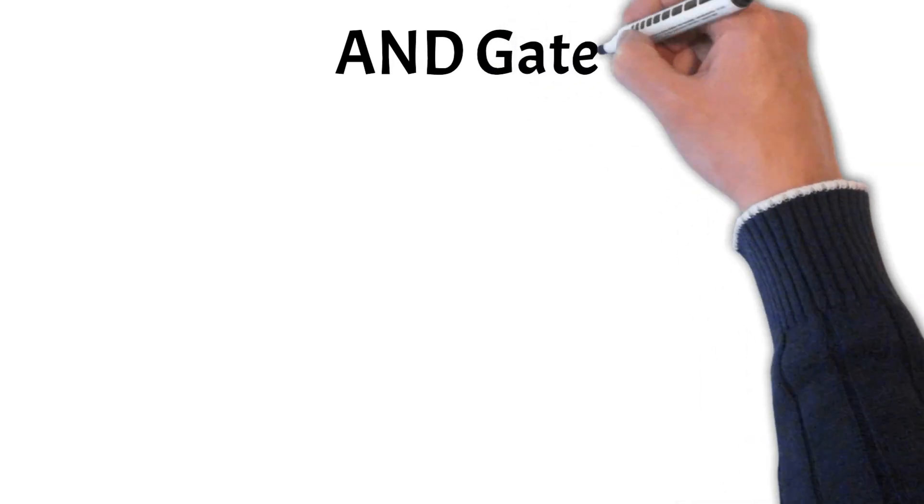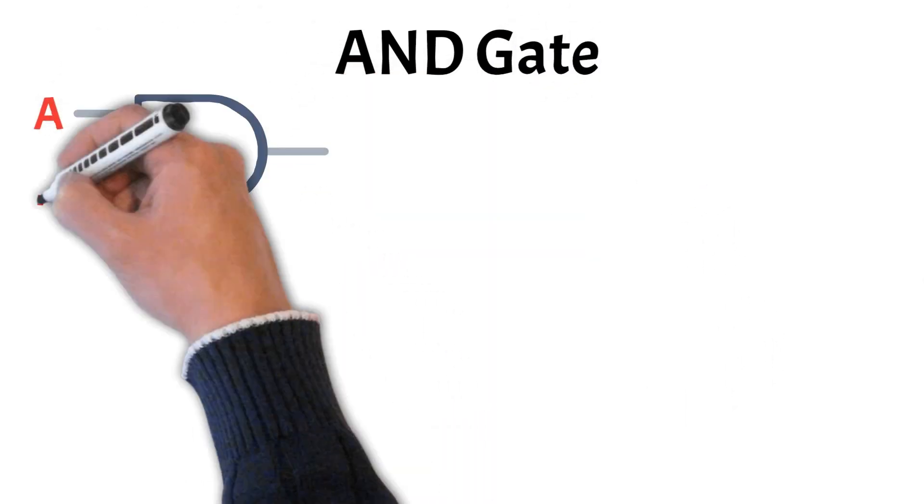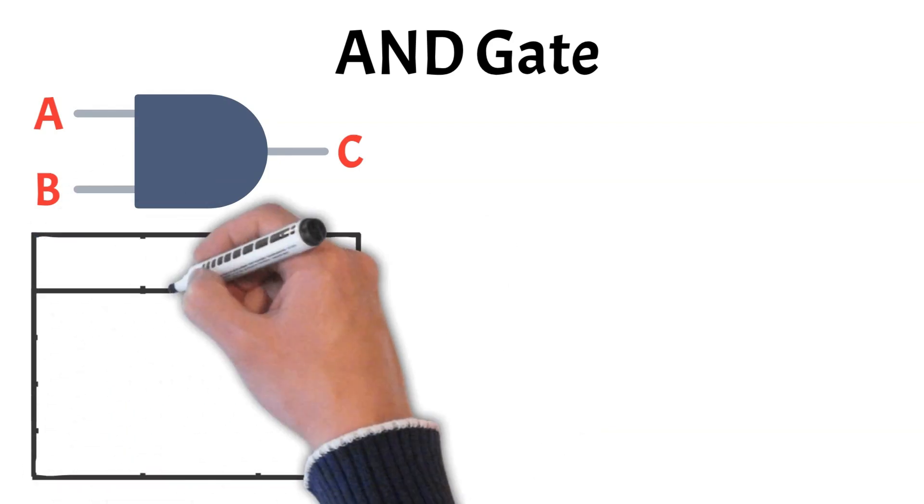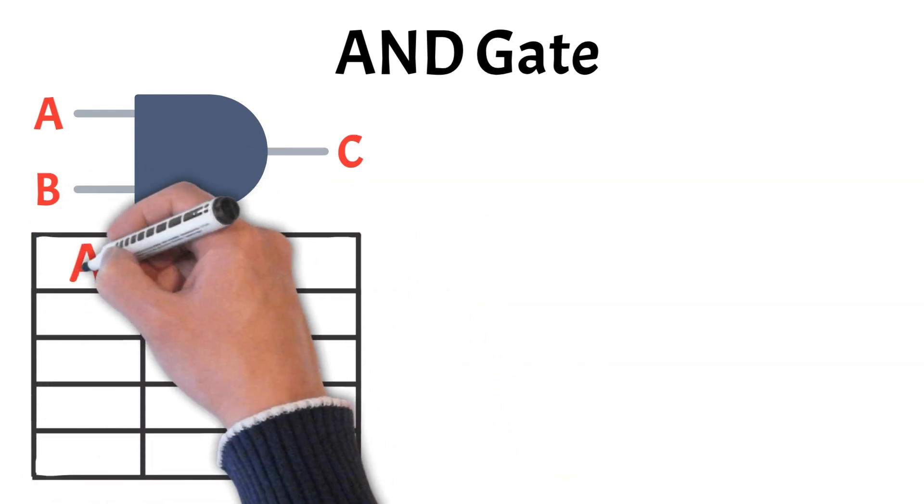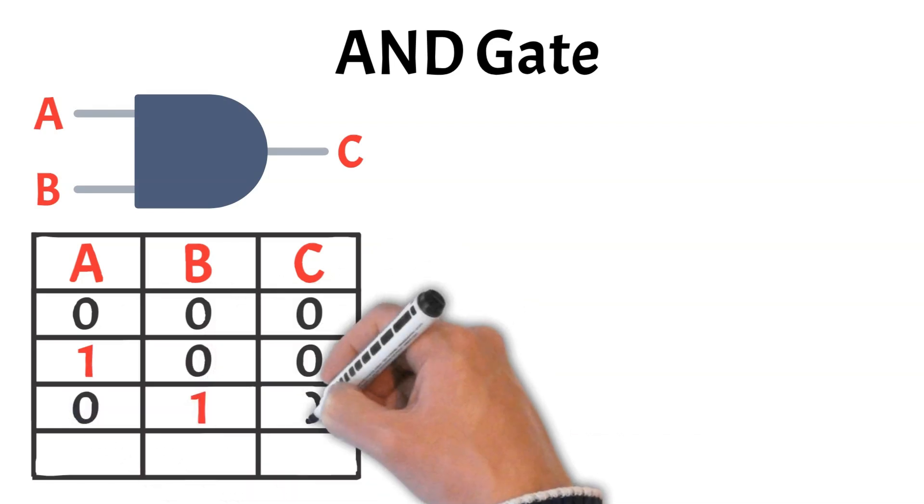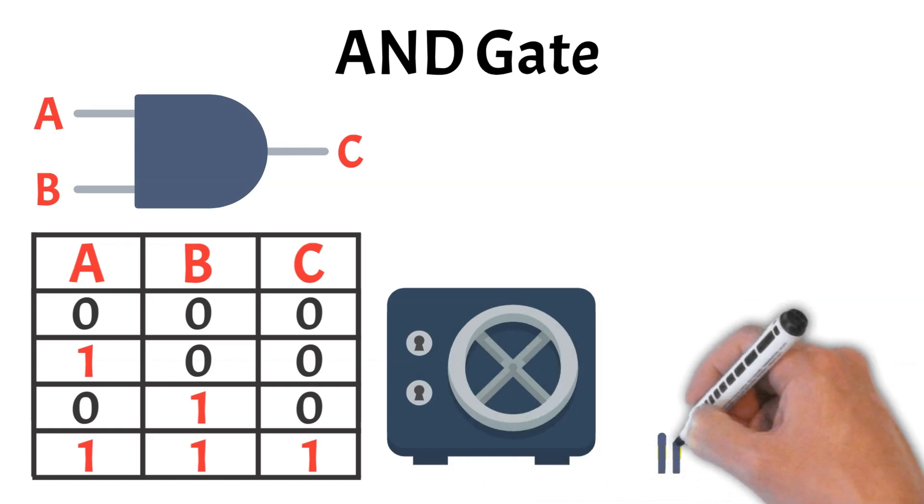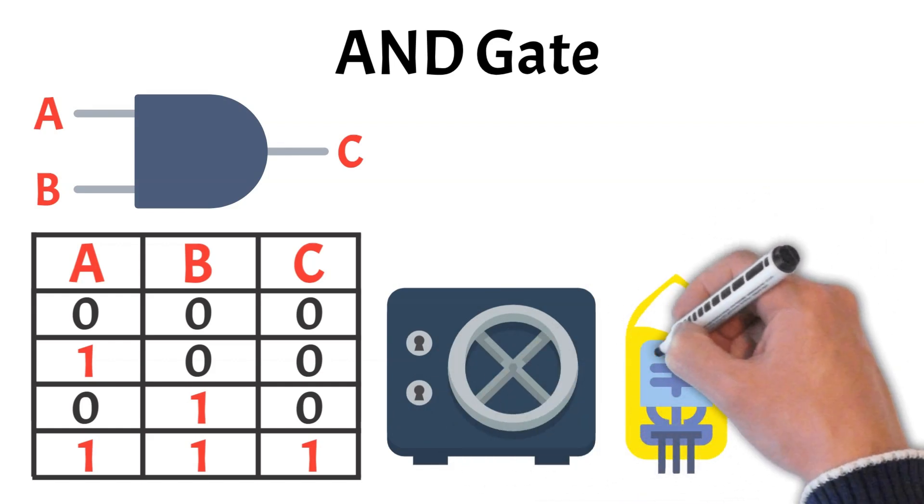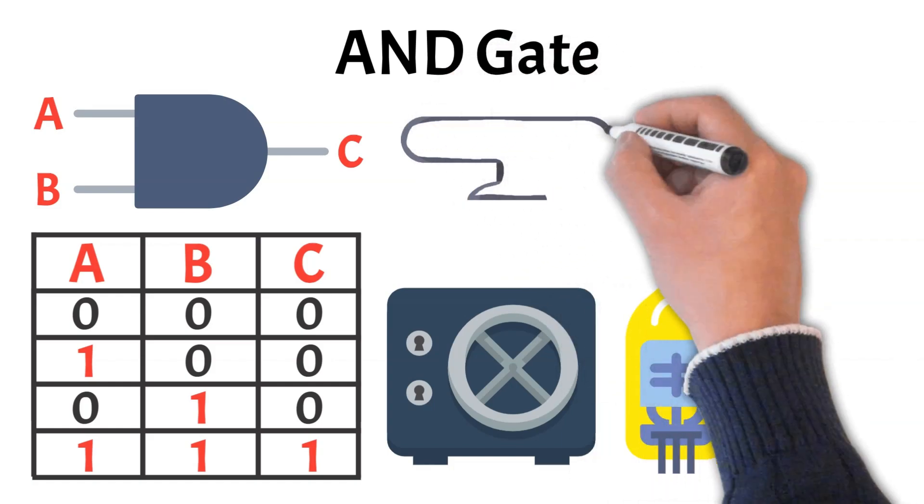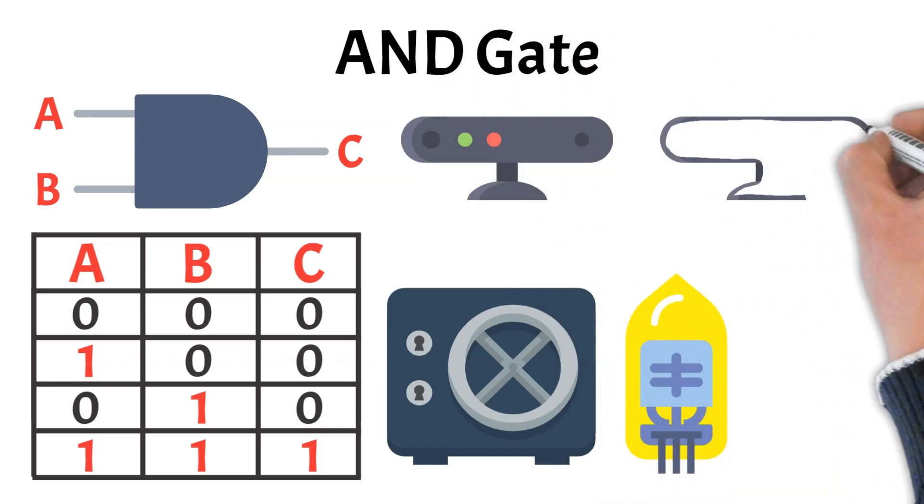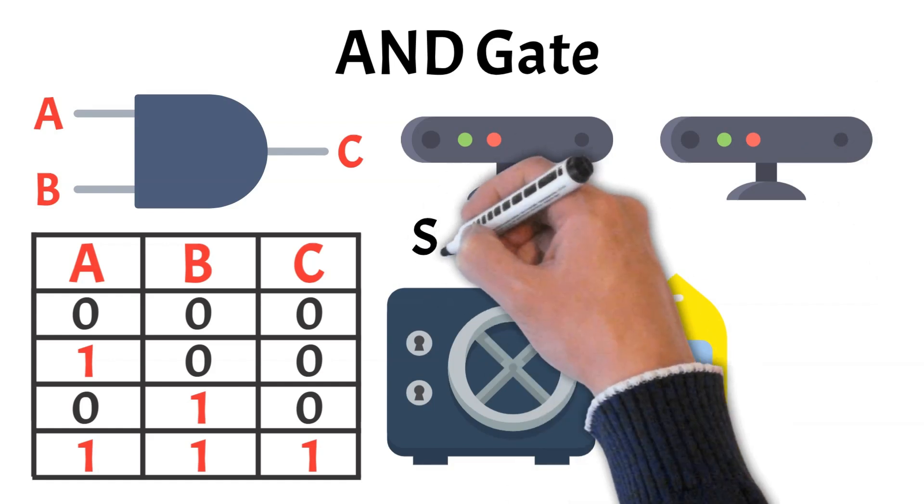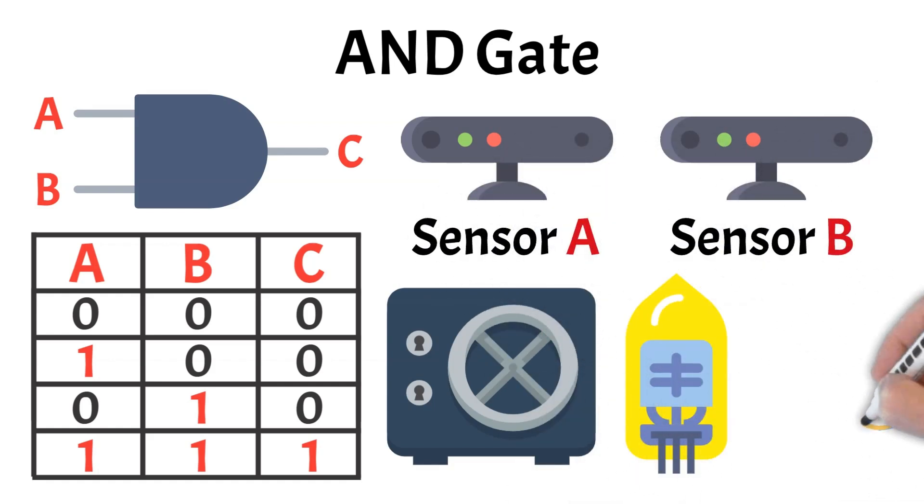Let's start with one of the most straightforward gates, the AND gate. This gate only outputs a one or on signal when all of its inputs are one. Think of it like a two-key safe. Both keys must be turned at the same time to unlock it. If even one input is zero, the output remains zero. This makes the AND gate useful in situations where multiple conditions must be true for something to happen. For example, a security system that only activates if two different sensors are triggered simultaneously. Visually, it's often represented with a flat input side and a curved output side, making it easy to recognize in circuit diagrams.